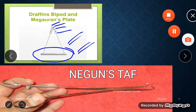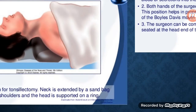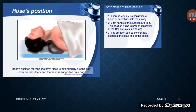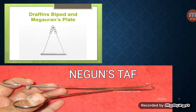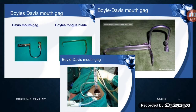Coming back to the rose position: another good advantage is that the surgeon can sit in front of the head of the patient and perform the surgery. Some additional points about the Boyle-Davis mouth gag: its uses are not only for tonsillectomy but also for adenoidectomy, cleft palate surgery, and uvulopalatopharyngoplasty.